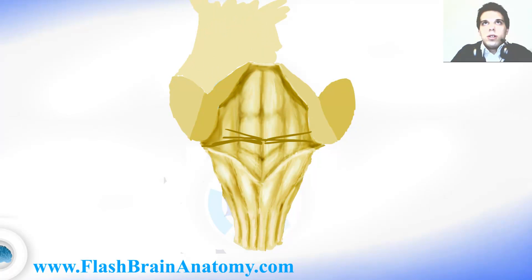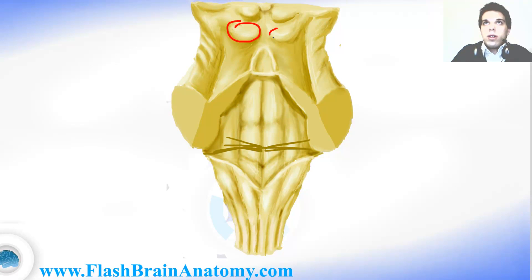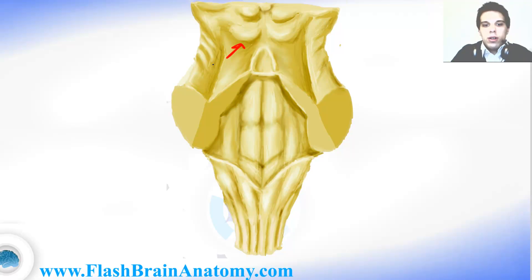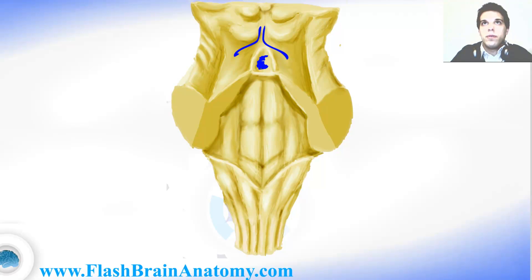Here comes the rest of the illustration, with the two inferior colliculi and the two superior colliculi. The inferior ones are important for the auditory functions of the brain. The superior ones are important for the visual function of the brain and for reflexes. This part over here is called the pineal gland, which we will learn about in next lessons. Here we can find the trochlear nerve, and this is the superior medullary velum.